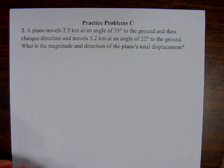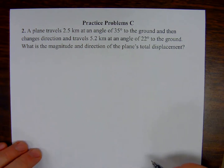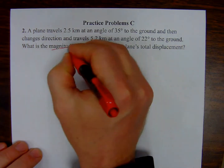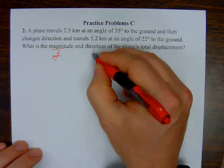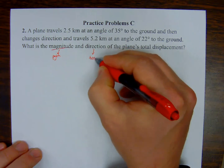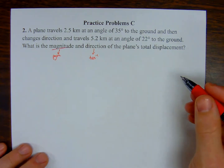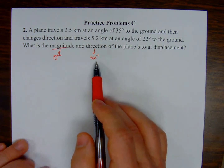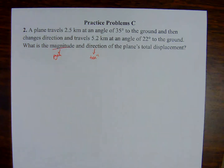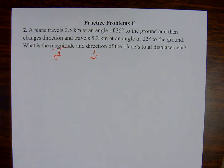At the end of this practice problem, we need to find a magnitude — we'll use the Pythagorean theorem — and the direction, using the inverse tangent function. But in order to use those, we're going to need one right triangle. We don't have that right now; we actually have two different movements, so at best we have two different triangles.